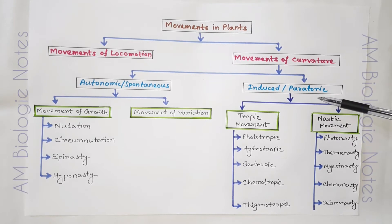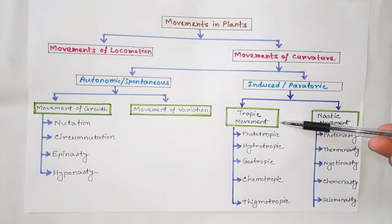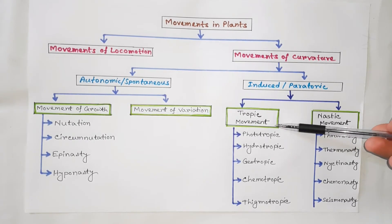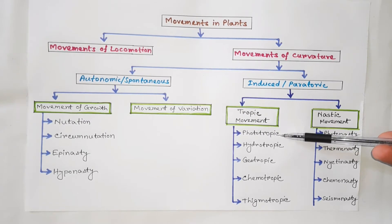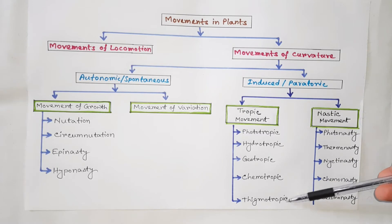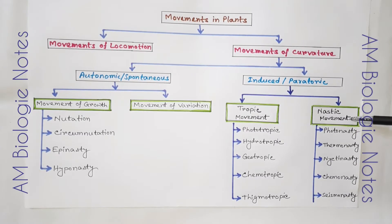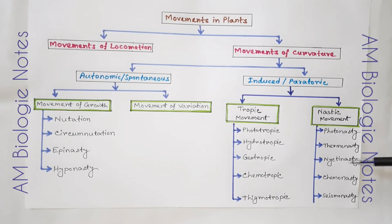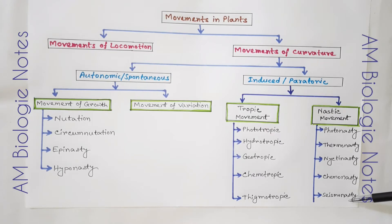The induced movements of curvature may be two types: tropic movement and nastic movement. Tropic movement may be of different types like phototropic, hydrotropic, geotropic, chemotropic, thigmotropic, etc. Nastic movement may also be photonasty, thermonasty, nictinasty, chemonasty, seismonasty, etc.